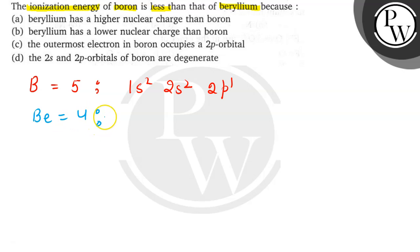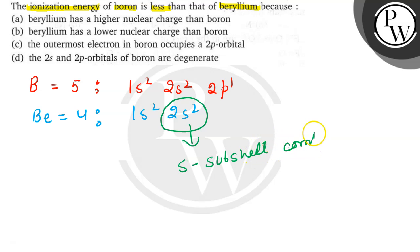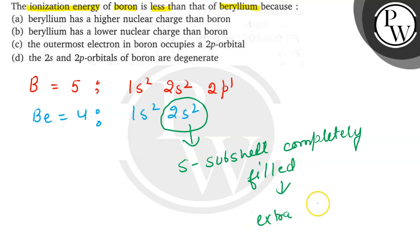And for beryllium, atomic number 4, it is 1s2 and 2s2. So we can clearly see here in beryllium, the outermost electron or outermost shell is completely filled. We can see here in beryllium the 2s subshell is completely filled, which gives extra stability.